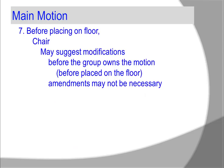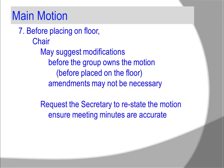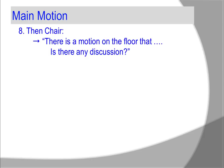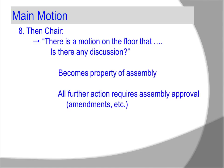Before the motion is placed on the floor, the chair may suggest modifications before the group owns the motion. For example, the chair may state, 'Do you want to put a maximum dollar amount spent on this portable lectern?' By covering these details before it is placed on the floor, this helps eliminate some amendments. The chair then requests the secretary to restate the motion to ensure the meeting minutes are accurate, then requests the person who made the motion to confirm it is recorded correctly. Then the chair states, 'There is a motion on the floor — is there any discussion?' Now it is the property of the assembly.